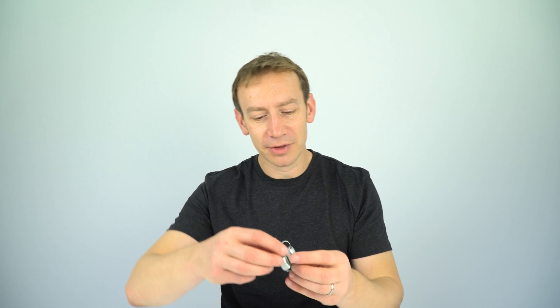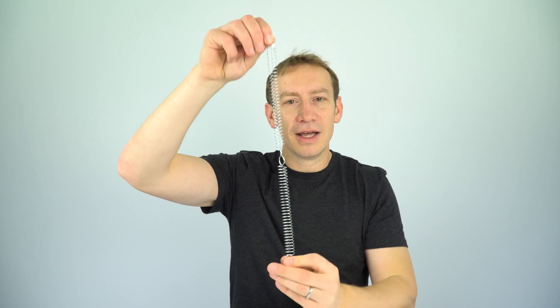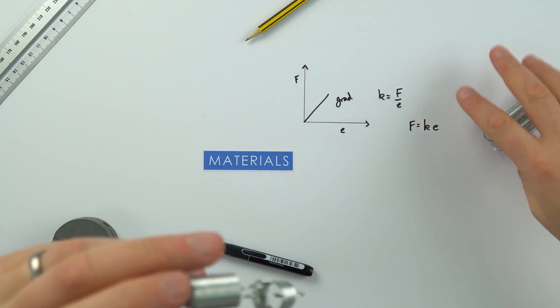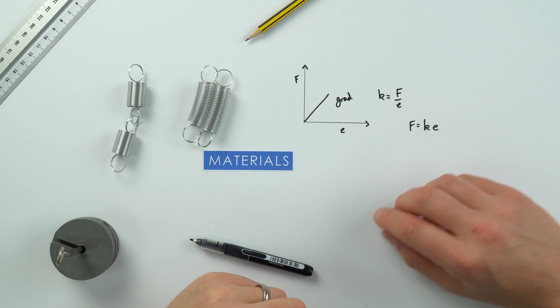At A-level we look at springs again — we look at how we can do this experiment, calculate the spring constant, and look at the area under the line which equals the elastic potential energy stored by that spring. We might also consider what happens if you have springs acting in parallel or in series, and how this affects the overall spring constant. Springs in parallel and in series often come up in exam questions.